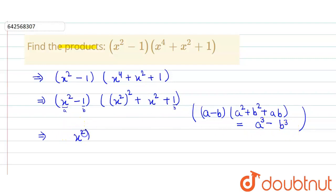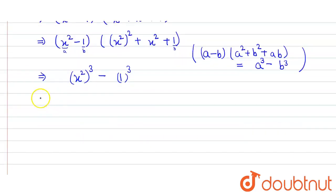So we get x squared cubed minus 1 cubed. This equals x raised to power 2 times 3 minus 1. We use the identity where a raised to power m whole to power n equals a raised to power m times n, so the powers get multiplied.